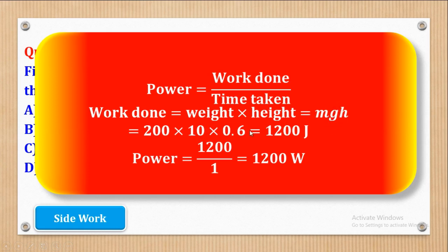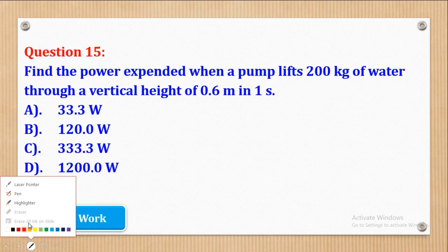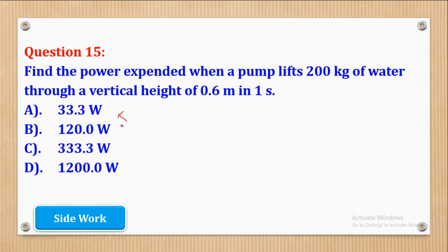Using g equal to 10 meters per second squared and height h equal to 0.6 meters: work done equals 200 times 10 times 0.6, which gives 1200 joules. Power equals work done over time taken, so 1200 joules divided by 1 second gives 1200 watts. Comparing with the options, the correct answer is part D.